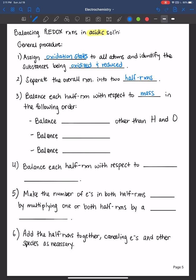First, balance all elements other than hydrogen and oxygen, then balance oxygen by adding water, and finally balance hydrogen by adding H+ because we're in acidic solution. You have to follow these in order.